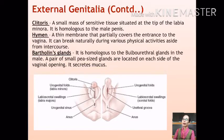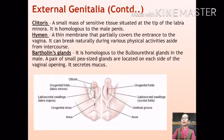At the opening of the vagina are two small pea-sized glands called Bartholin's glands, which secrete mucus to lubricate the vagina. These Bartholin's glands are considered homologous to the bulbourethral glands in males.